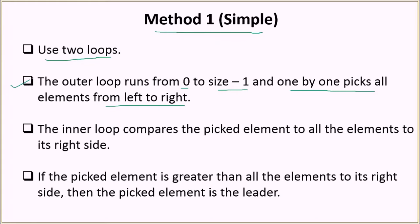So this is the first loop. Then in the inner loop, we basically compare the picked element in the outer loop and we compare this picked element to all the elements to its right side. And if the picked element is greater than all the elements to its right side, then the picked element is a leader. If there is at least one element to its right side which is greater than the picked element, then it's not a leader.